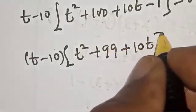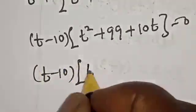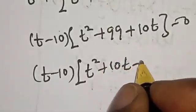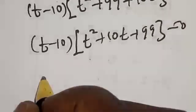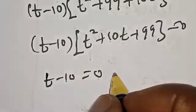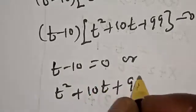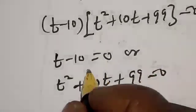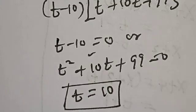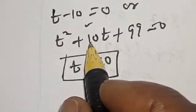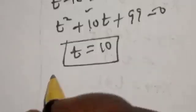We have (t-10)(t² + 10t + 99) = 0. There are two cases: t - 10 = 0, or t² + 10t + 99 = 0. From the first case, t = 10. The second case is a quadratic equation which we solve using the quadratic formula.